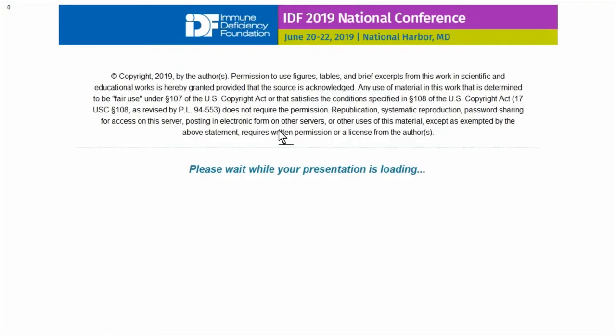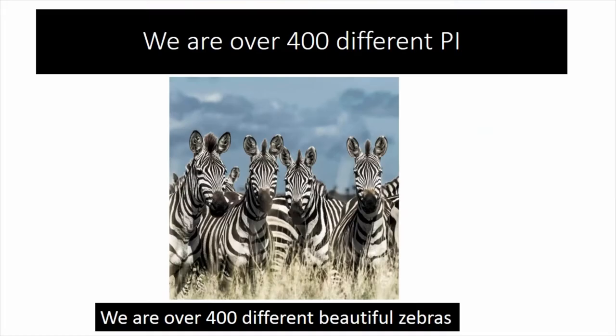Right now we think there are over 400 different primary immune deficiencies. You could look at that as 400 different primary immune deficiencies, but we all know we're all part of the same herd. We are 400 different, beautiful, and similar zebras. So I'm going to approach PI from that context. I'm not going to call out individual diseases except for one slide.